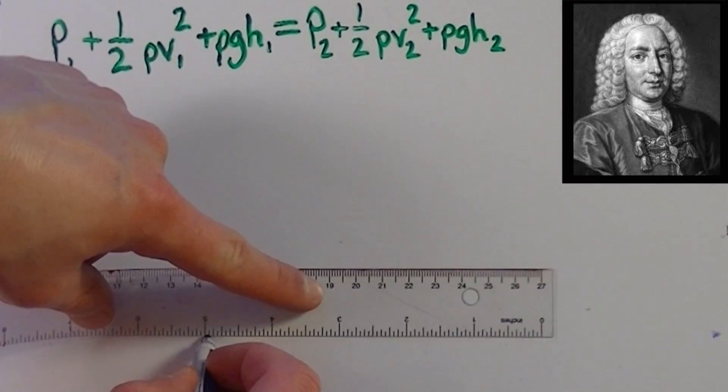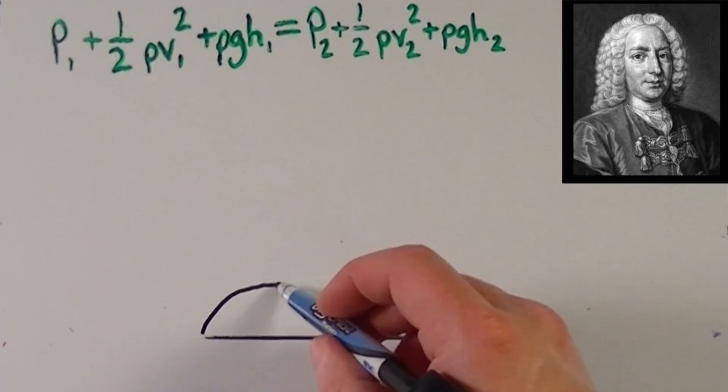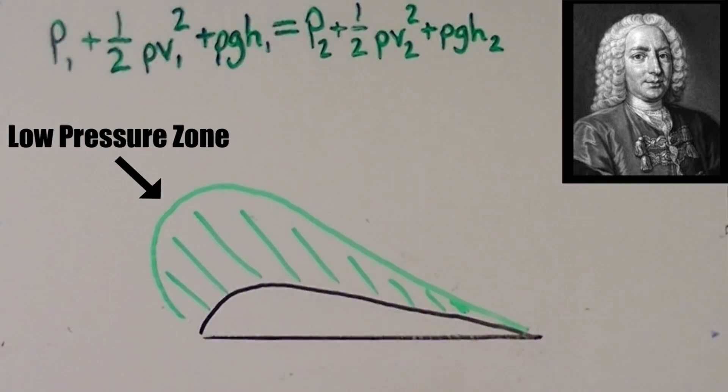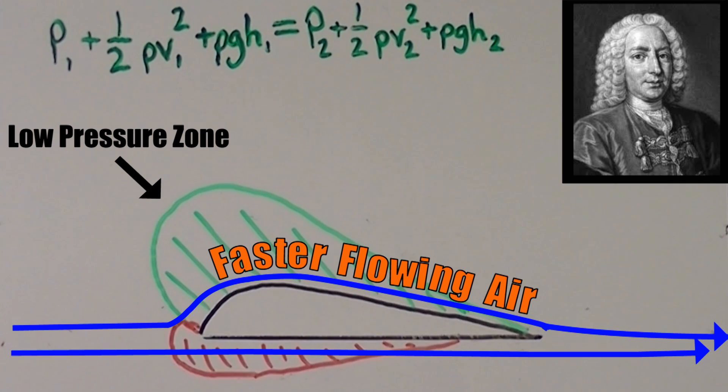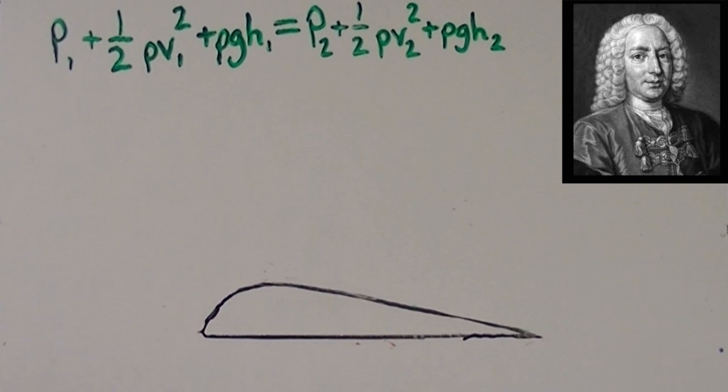When this is applied to aeronautics, we get the lift hypothesis that most of us are familiar with, which states that a low-pressure zone is created above the wing due to the air having to flow faster over the longer curved upper surface of the wing than over the flat lower surface in order to reconnect with the air flowing under the wing as it leaves the trailing edge. But this view of lift generation has some serious issues.